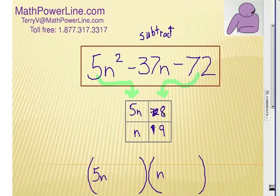So, again, if I go across, straight across, 5n times 8 is 40n. 9n times 9 is 9n. Now, does that work? Remember, I have to subtract. Is there a way to subtract 40n and 9n and get 37? No. So, that doesn't work.